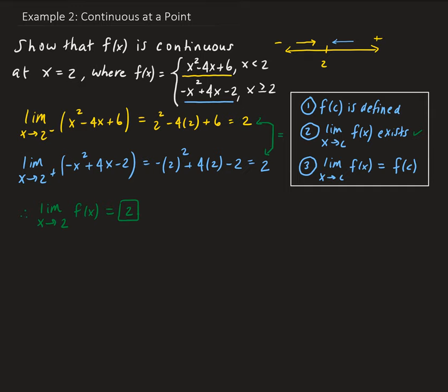Now we need to evaluate the function at 2. We want to use the bottom part of the piecewise function, because that says when x is greater than or equal to 2, we use that piece. So we're going to compute minus 2 squared plus 4 times 2 minus 2.